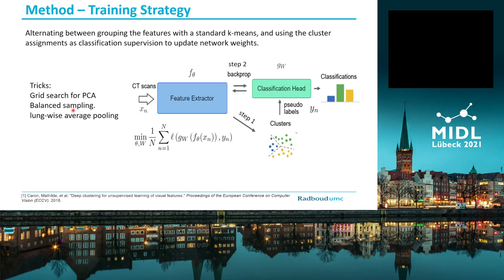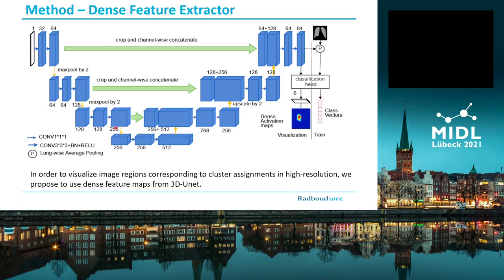One important trick is to do balanced sampling, because k-means never guarantees a balanced cluster assignment. This is our feature extractor, which is basically a 3D U-Net. We use dense features for classification training, which is different from the standard approach where people use the feature at the lowest resolution from VGG or ResNet for training classifiers. In our case, we use log-sum-exp pooling to pool these dense features into a 64-dimension feature vector as input to the classification head, and then apply standard cross-entropy training. After training, we can visualize the cluster assignment decisions by skipping the pooling layer and directly using dense features as input to the classification head, therefore producing dense class activation maps.